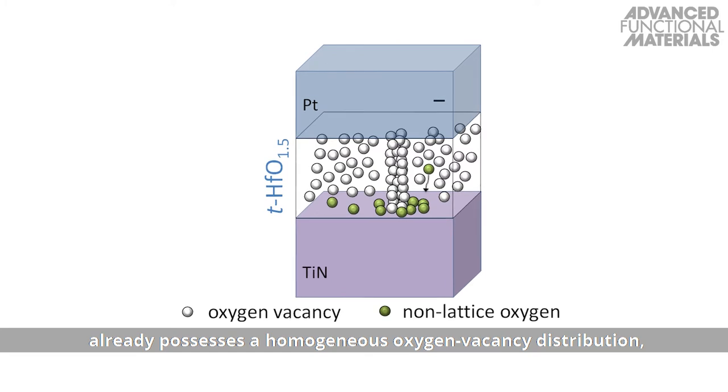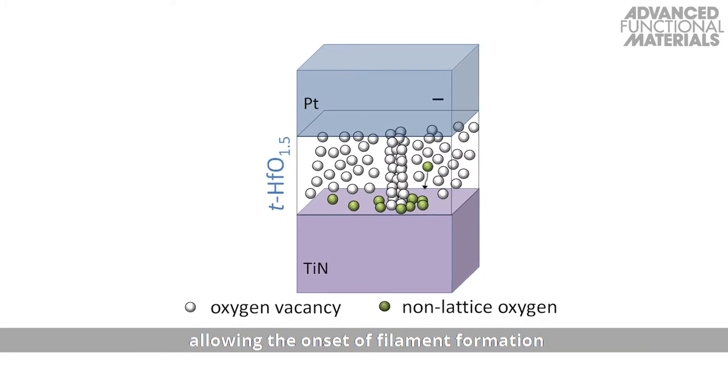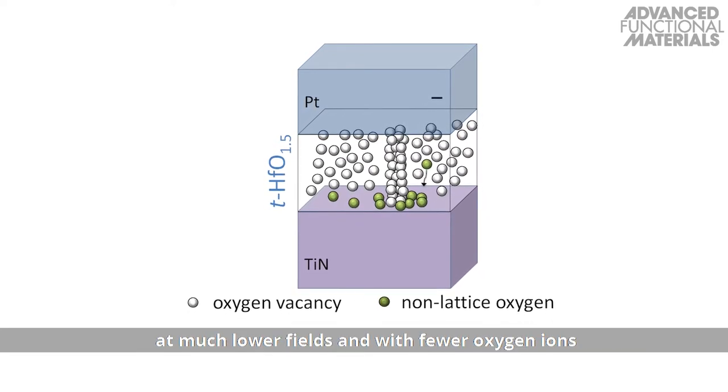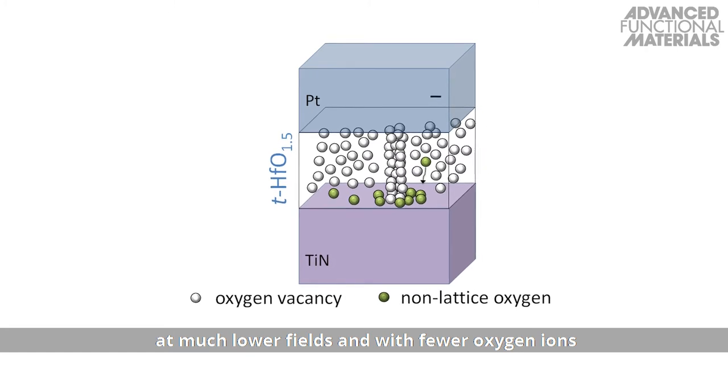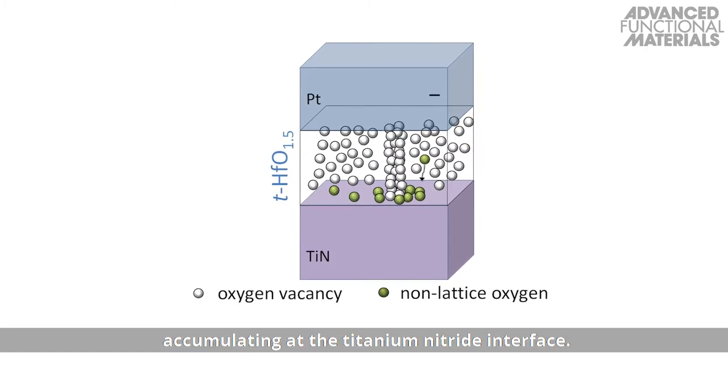Oxygen-deficient tetragonal hafnium oxide already possesses a homogeneous oxygen vacancy distribution, allowing the onset of filament formation at much lower fields and with fewer oxygen ions accumulating at the titanium nitride interface.